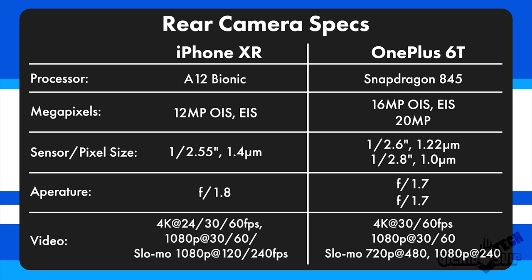When it comes to aperture, both cameras are very close with f1.8 on the XR and f1.7 on the OnePlus 6T. Video modes are also nearly identical with 4K at 24, 30, and 60 FPS on the XR, while the OnePlus 6T only has 4K 30 and 60. For slow motion, the OnePlus 6T offers better options with up to 480 FPS at 720p, while both phones have 1080p at 240 FPS.